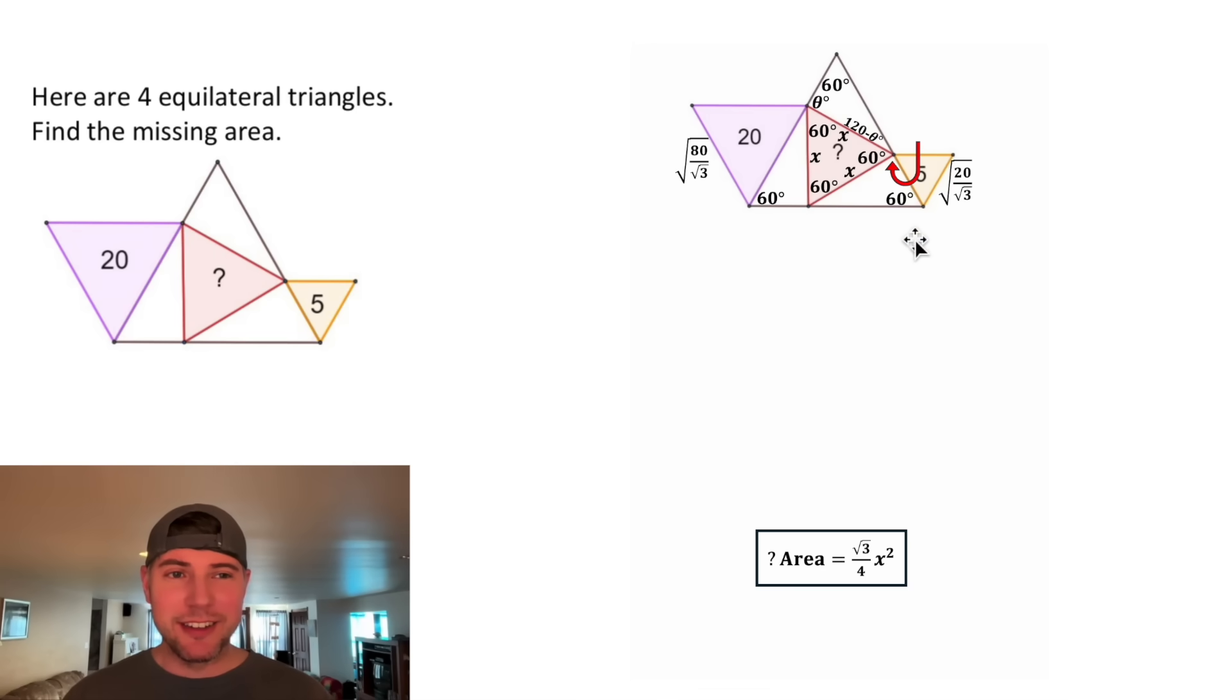These three angles will add to 180 degrees. So this last angle will be 180 minus 120 minus theta minus 60. From here, we can distribute this negative to both of these terms. Negative 120 plus negative 60 is negative 180, and these will cancel each other out. So this angle is equal to theta.